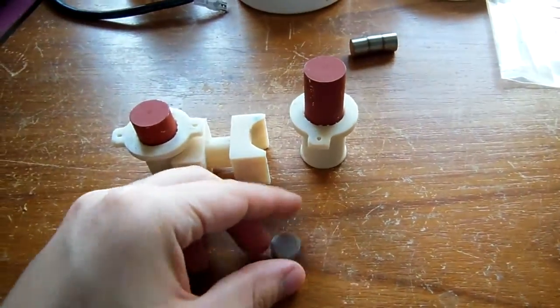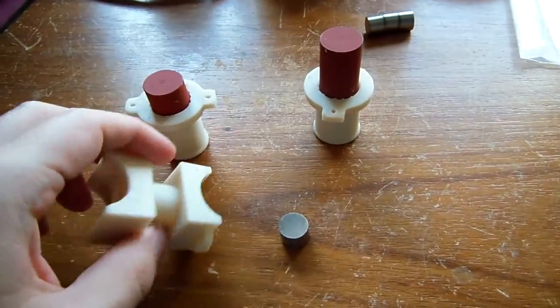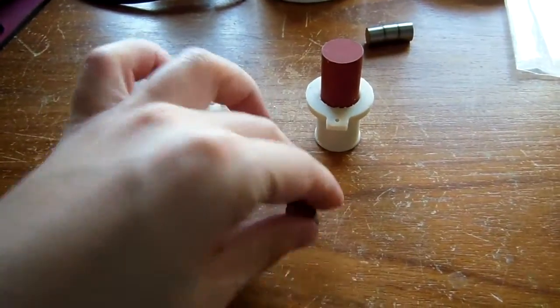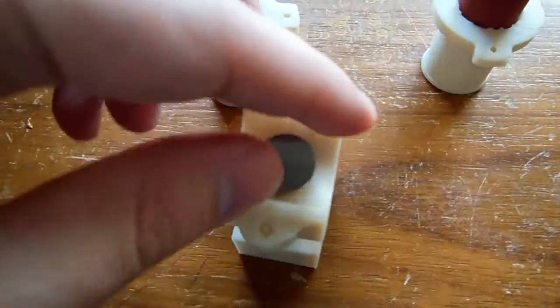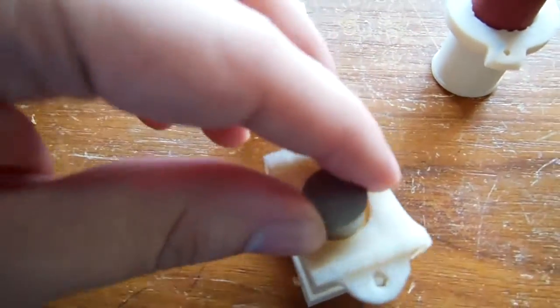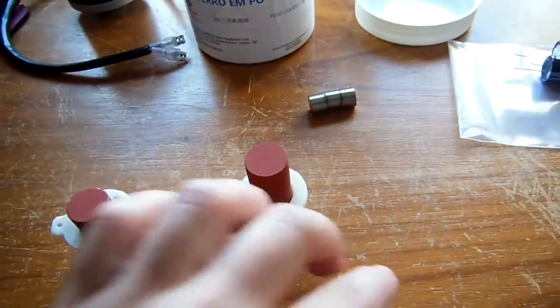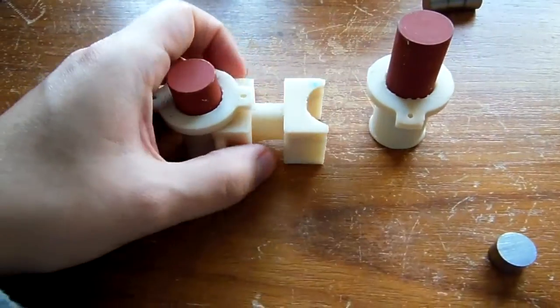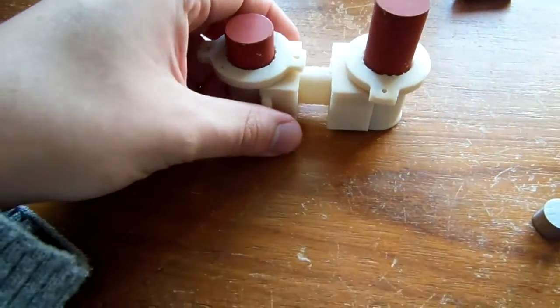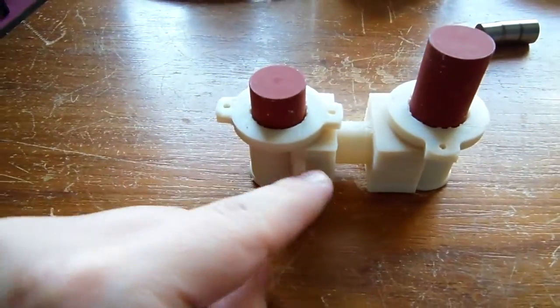I'm gonna use this Alnico inside of this part and I'm gonna fill this part with iron powder as well so I can make a complete path to the magnetic flux. The magnetic flux will be able to pass to here.